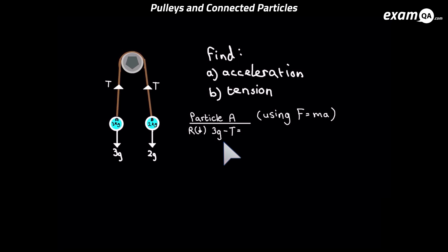So we know tension is in the opposite direction. So we have 3G minus T. And remember, all the forces is always going to be equal to MA. MA is of course the mass times acceleration. Acceleration we don't know, but the mass is 3 kg. So we've got our first equation. Now we can do the same thing for particle B.